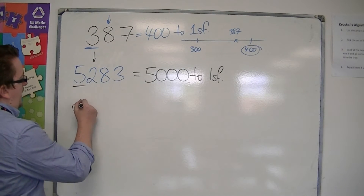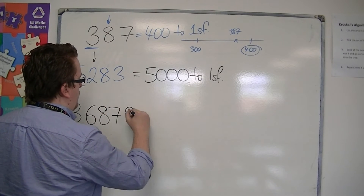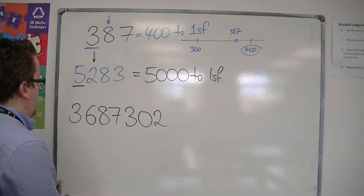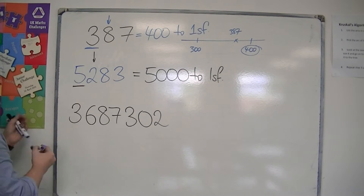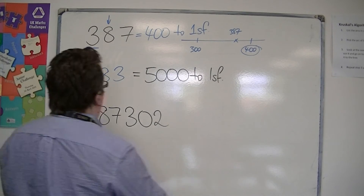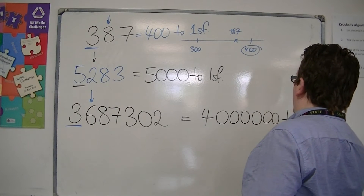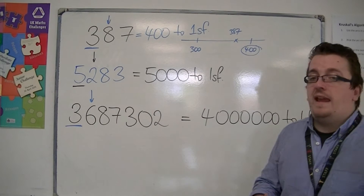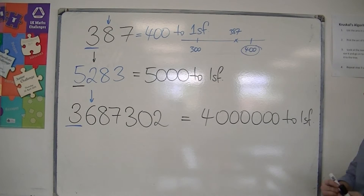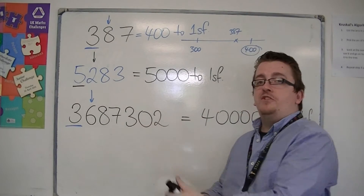If I then looked at 3,687,302, you work from left to right. The first digit I hit is the three. I look one to the right — the six tells me to round up. So this would be 4,000,000 to one significant figure. It's asking: is it closer to 3,000,000 or 4,000,000? And it's closer to 4,000,000. So with one significant figure, you work from left to right and identify which is the most important digit.